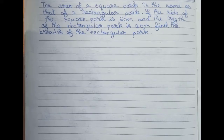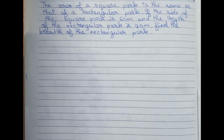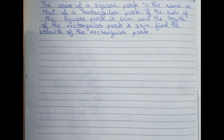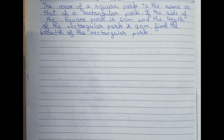Hello guys, welcome to this video. In this video, our question is: the area of a square park is the same as that of a rectangular park. If the side of the square park is 60 centimeters and the length of the rectangular park is 90 meters, find the breadth of the rectangular park. So this is our question, and now we solve it.